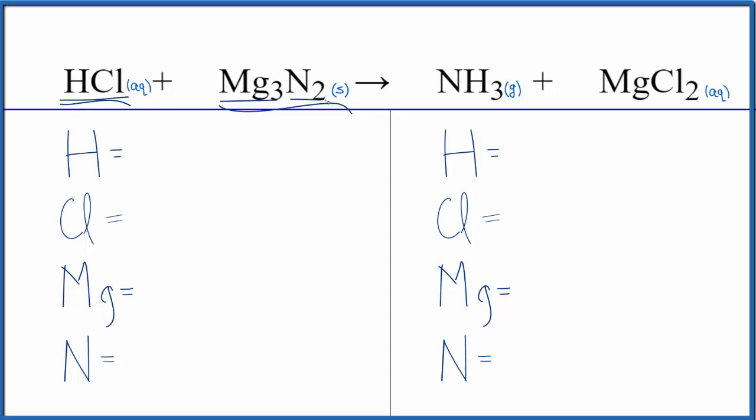This is magnesium nitride. So the first thing we need to do to balance this equation is count the atoms up. We have one hydrogen and one chlorine atom. For magnesium, we have three and then two nitrogen atoms.